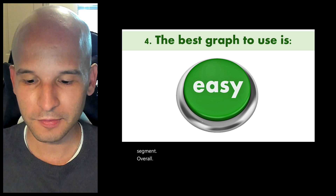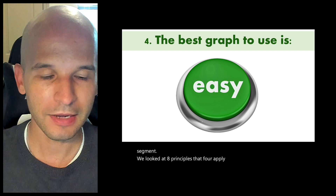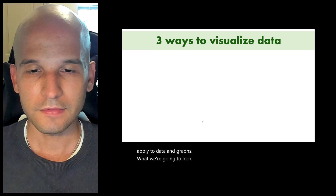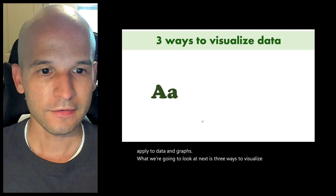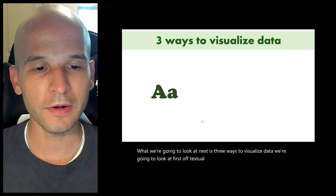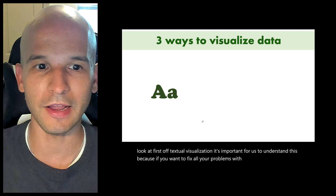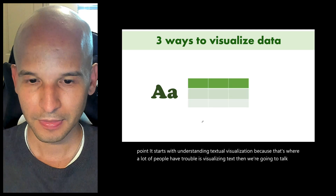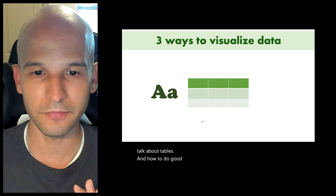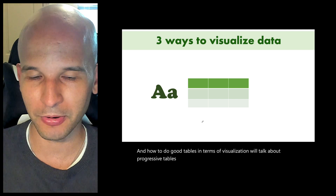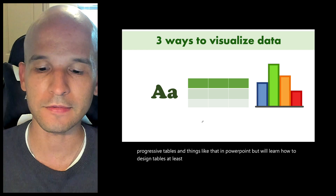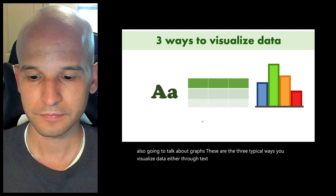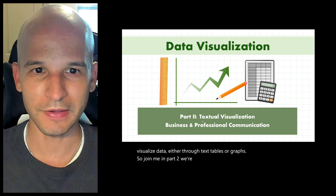Overall, we looked at eight principles — four that apply to PowerPoint generally, and four that apply to data and graphs. What we're going to look at next is three ways to visualize data: first, textual visualization, because that's where a lot of people have trouble; then tables and how to design good tables for written and PowerPoint contexts; and then graphs. Those are the three typical ways you visualize data — through text, tables, or graphs. Join me in part two where we'll start with textual visualization. See you there.